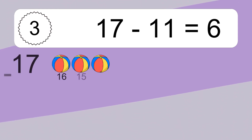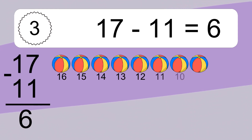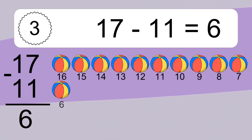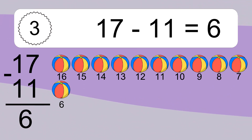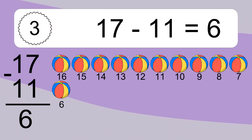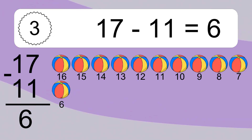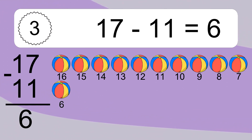17 minus 11 equals what? 17 minus 11 equals 6. Let's count it: 16, 15, 14, 13, 12, 11, 10, 9, 8, 7, 6.